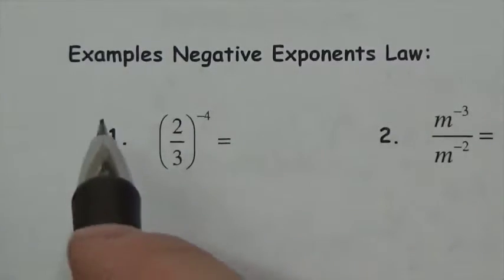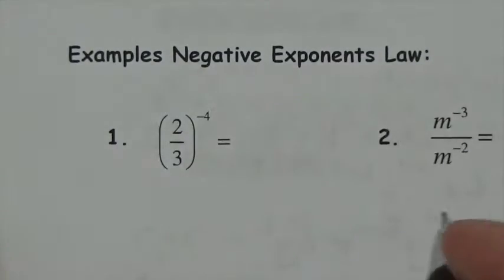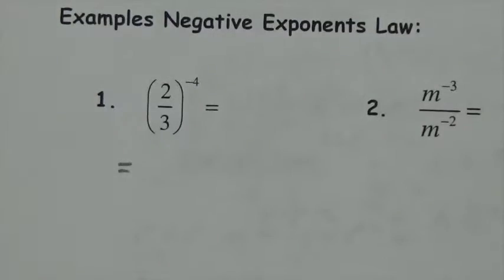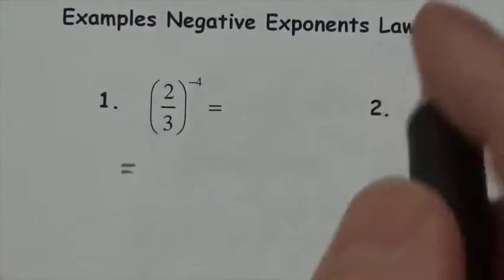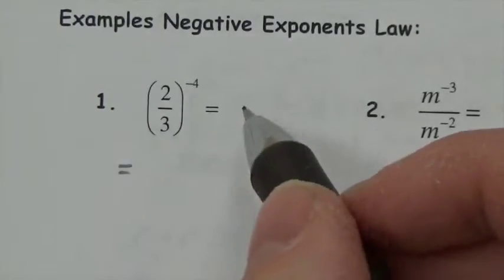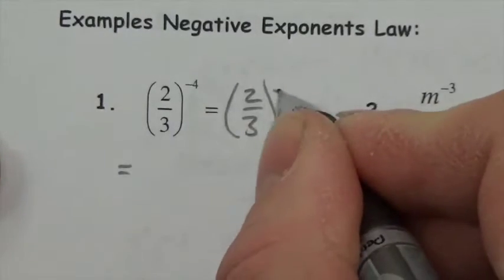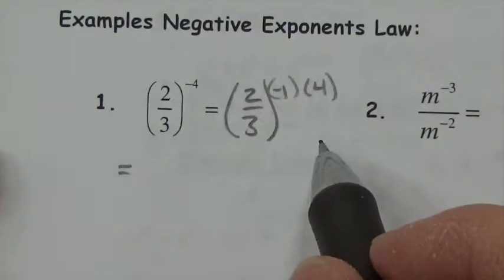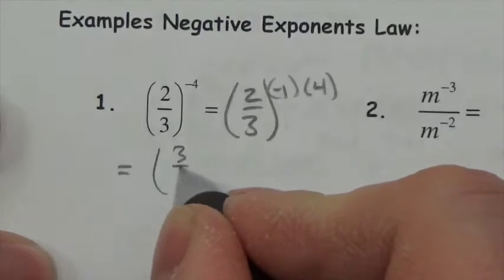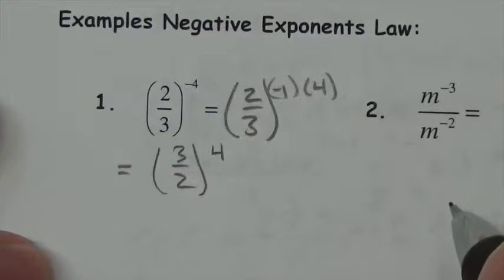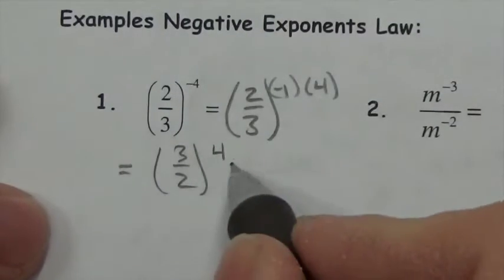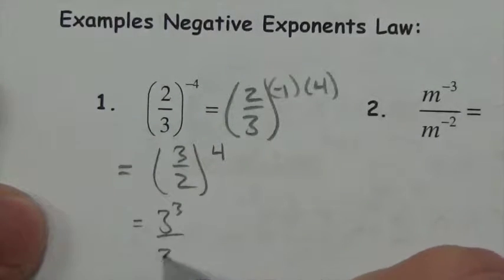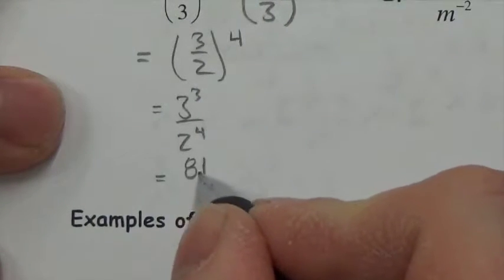Examples of the negative exponents law. For (2/3) to the negative 4: deal with the negative first — think of it as to the negative one times to the fourth. The negative one causes a reciprocal, flipping the fraction to 3 over 2. Then apply the 4 to numerator and denominator: 3 to the fourth over 2 to the fourth, giving 81 over 16.